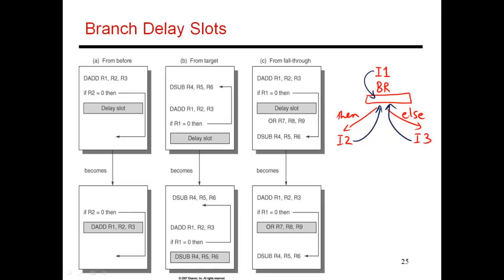If I move I1 into the branch delay slot, then the code becomes: branch, I1, then one of the two paths. This is ideal — I1 needs to be executed regardless of which path is taken, so it is always doing something useful in the branch delay slot. Moving something from before the branch into the branch delay slot means I never waste a cycle due to hitting this branch. This is the ideal case.